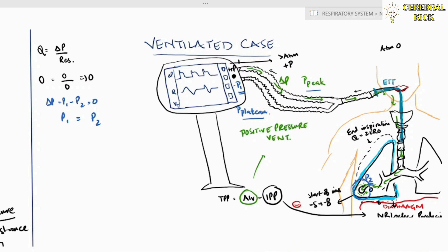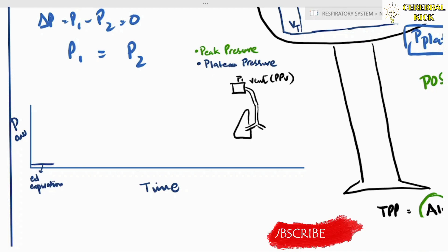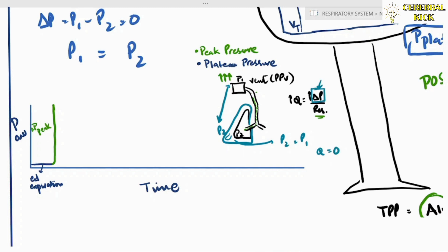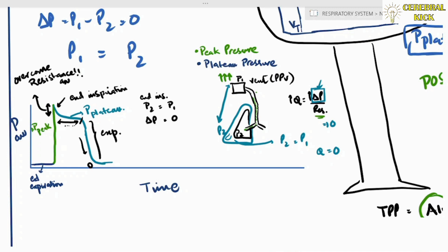On the ventilator screen, initially there is end-expiratory pressure. The ventilator delivers positive pressure, generating flow from P1 to P2. Initially this flow overcomes airway resistance, requiring a greater pressure gradient — this is the peak pressure, shown in green. Once flow is established, the lungs inflate until end-inspiratory phase, where pressure at the ventilator and alveoli equalize, creating a plateau in the graph — the plateau pressure. It is lower than peak pressure because the peak pressure was used to overcome resistance; in the no-flow state there is no resistance, so pressure drops.